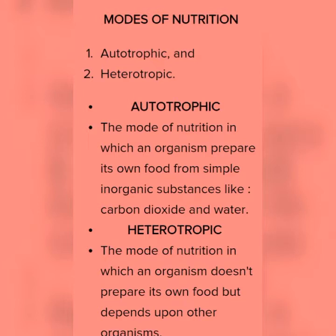There are mainly two modes of nutrition: autotrophic and heterotrophic. Organisms that perform autotrophic nutrition are known as autotrophs, and organisms that perform heterotrophic nutrition are known as heterotrophs. The mode of nutrition in which an organism prepares its own food from simple inorganic substances like carbon dioxide and water is known as autotrophic nutrition.